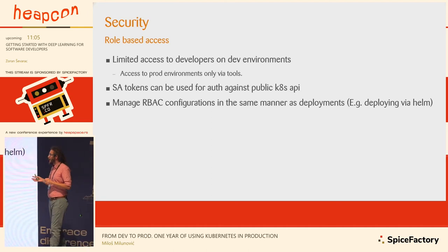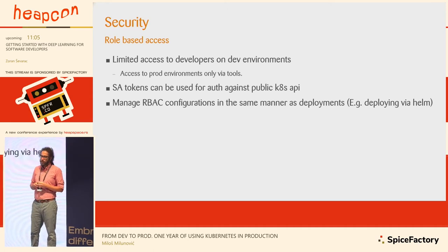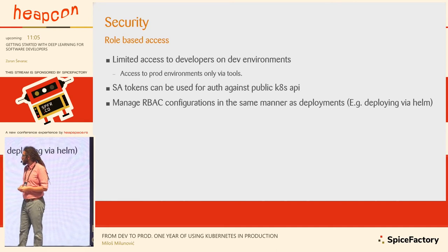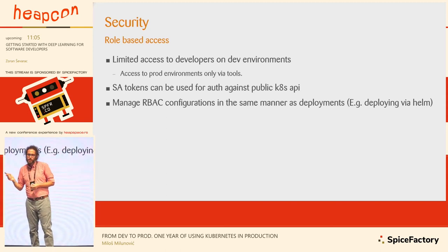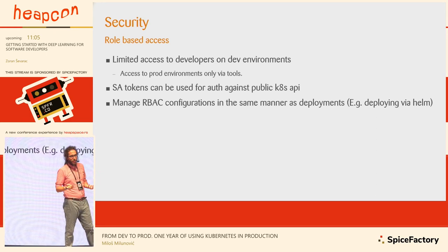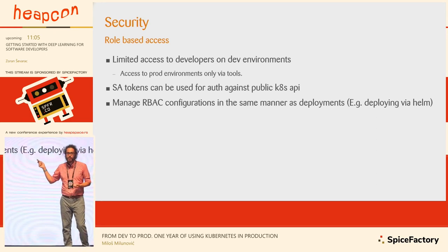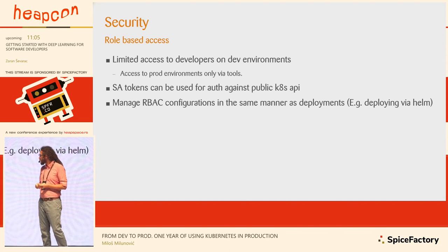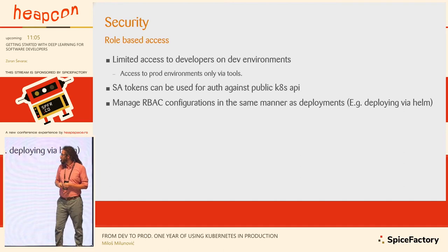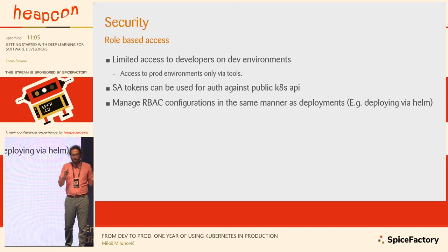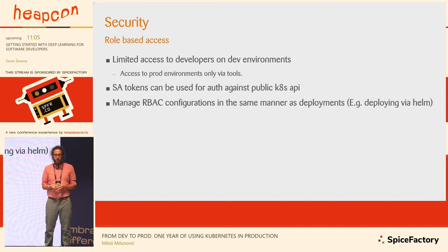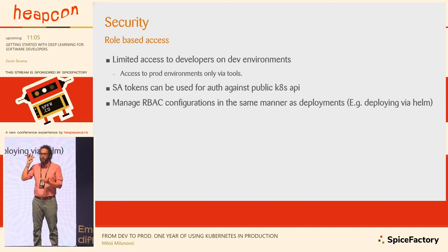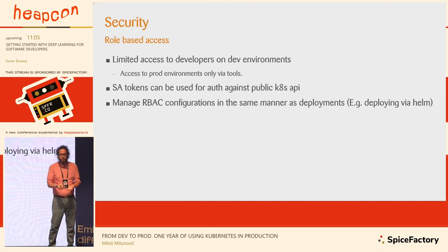Regarding role-based access — how much access should you give to the teams using your environments? Limited access to developers on all environments apart from dev is a must. Important to note: all Kubernetes clusters have an internal and external API, and service account tokens from the internal API from nodes running in your cluster can be used against the external API, granting any attacker access to your cluster data. Last point: manage role-based access configurations in the same way you do deployments — since all configurations in Kubernetes are basically just YAML files, there's no difference between managing access configurations as YAML files versus deploying a single app.